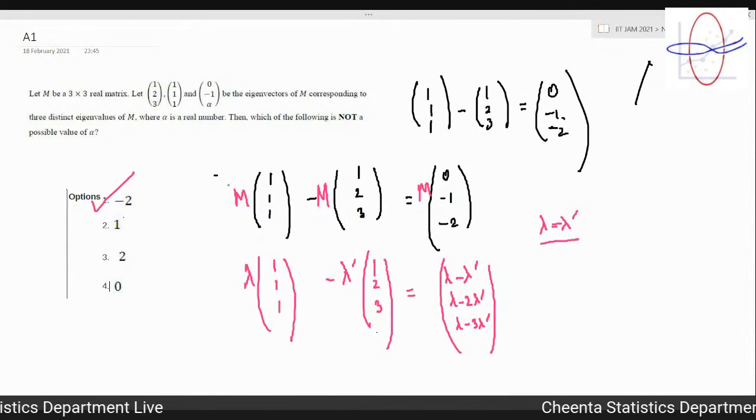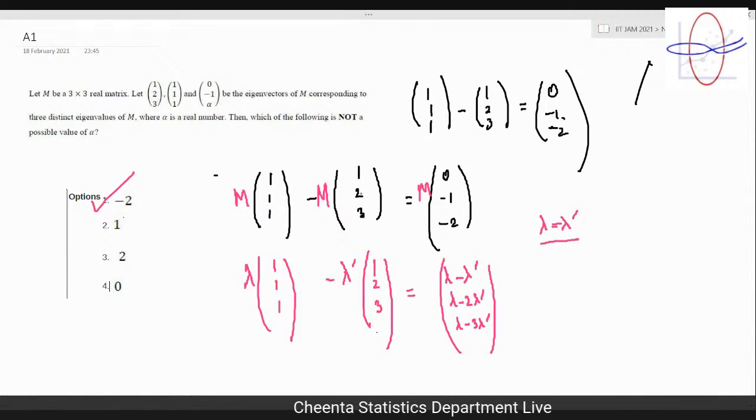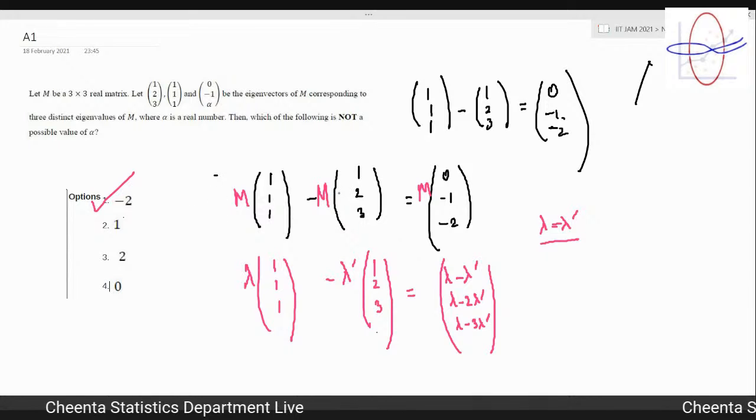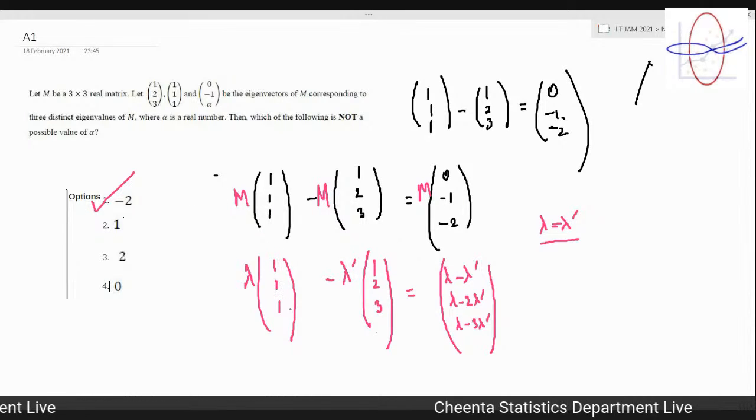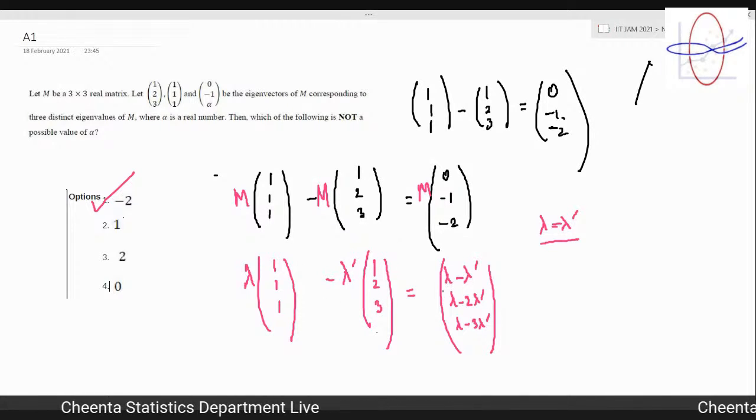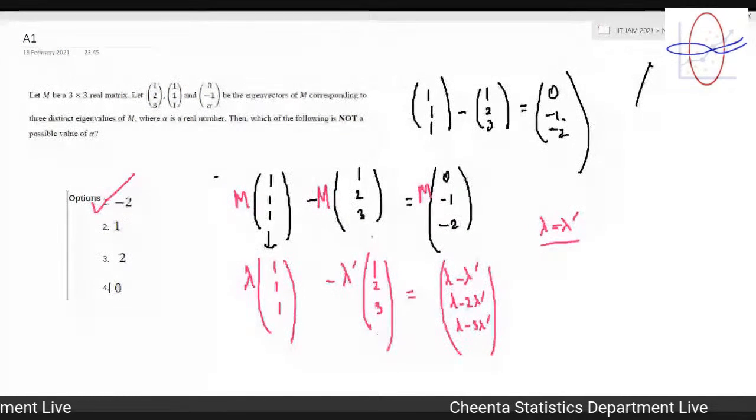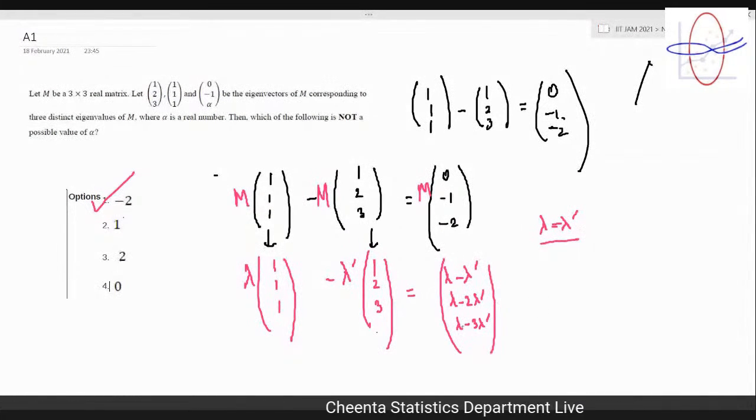And -2 is actually in one of the options, so I did it. So 1,1,1 minus 1,2,3 equals 0, -1, -2. If you put M, if you linearly transform it now, it is lambda times 1,1,1 minus lambda dash times 1,2,3. If you subtract it will give you lambda minus lambda dash, lambda minus 2 lambda dash, and lambda minus 3 lambda dash. This comes from the eigenvector definition.